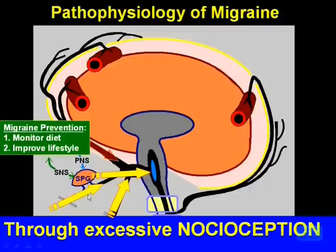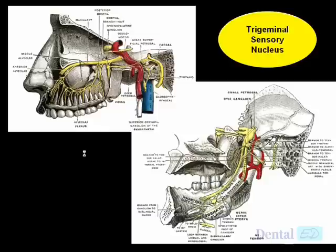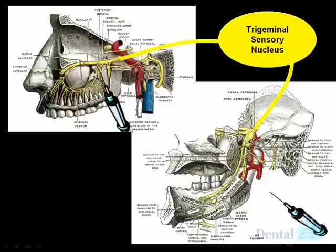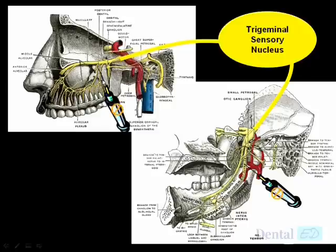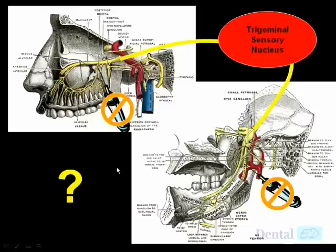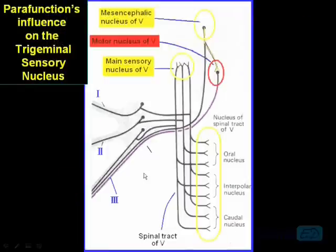In dentistry, we see input to the second and third division all the time, but to a physician, all their thinking is through the first division. Can you imagine not anesthetizing these sensory neurons? You'd have a huge bombardment — a centralization of the system where everything becomes painful and everything is perceived as negative. So how does parafunction influence this trigeminal sensory nucleus?